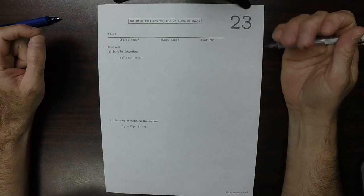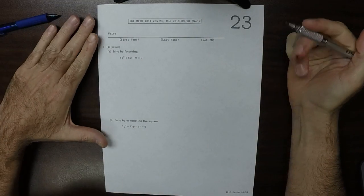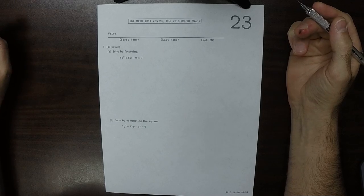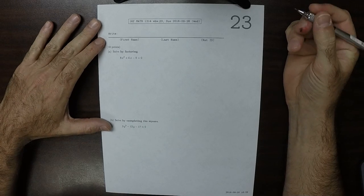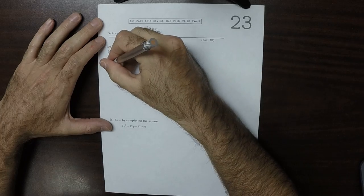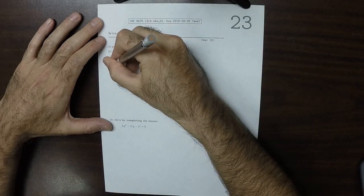This is the solution to written homework 23. Part A is a quadratic, and we're told to solve by factoring. So we'll use the grouping method.